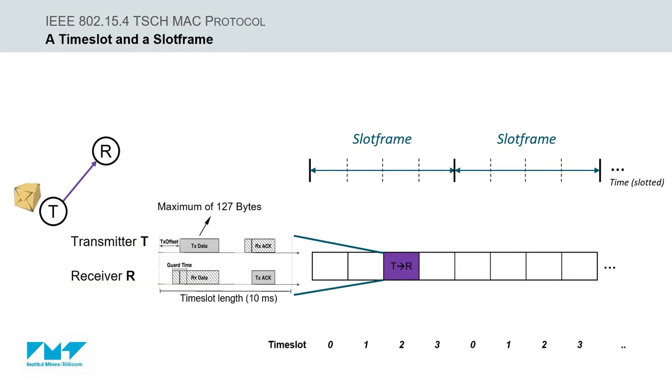A time slot is long enough, typically 10 milliseconds, for a node in the network to send a maximum-sized 127-byte frame to its neighbor and for that neighbor to send back a link layer acknowledgement.